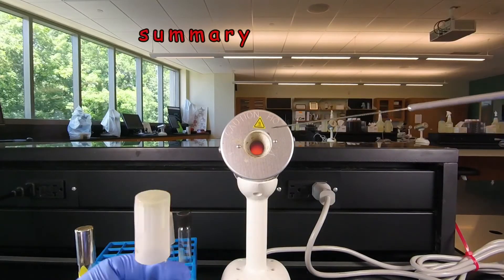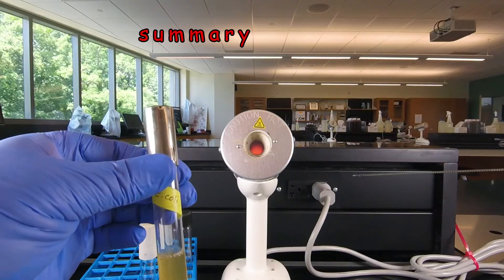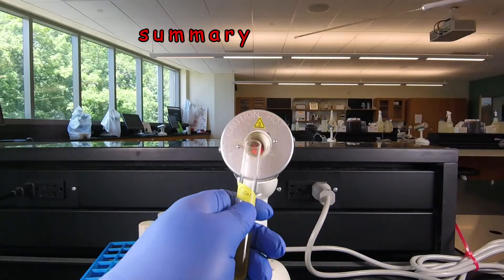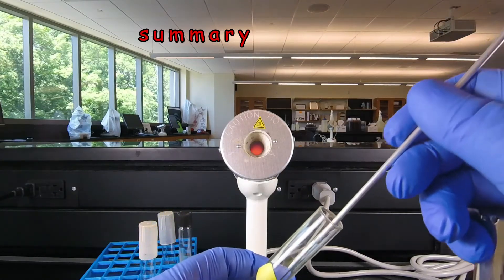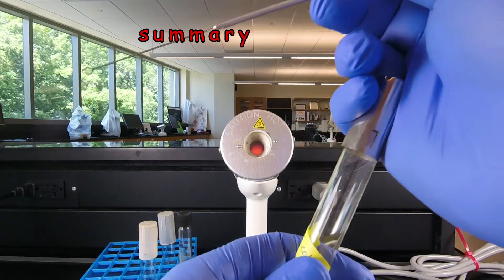So when we're ready to remove bacteria from a pure culture like this E. coli, we would remove the cap with the little finger, flame the tube, take out the bacteria with our sterile loop, flame the tube and put the cap back on.